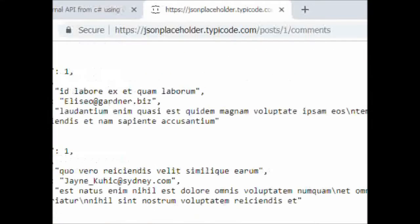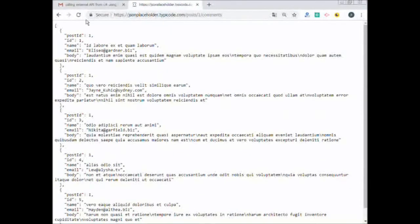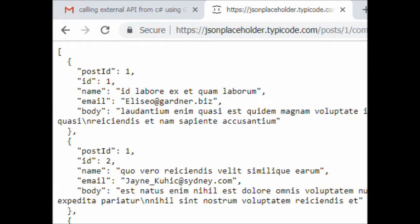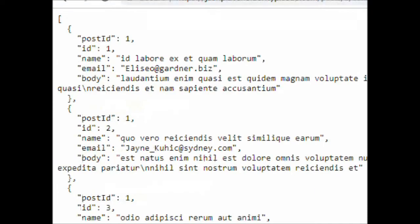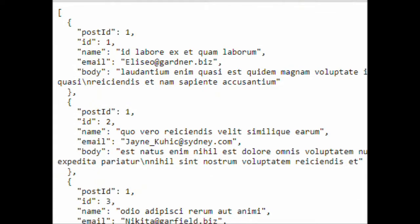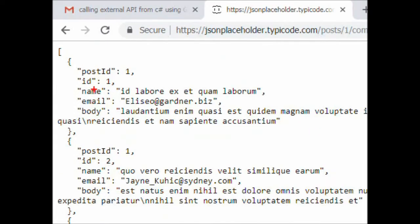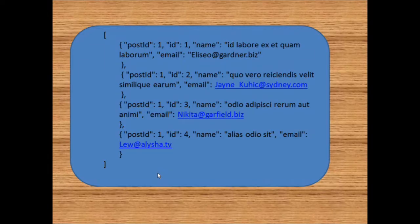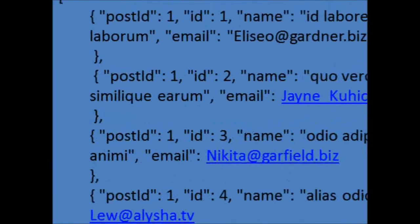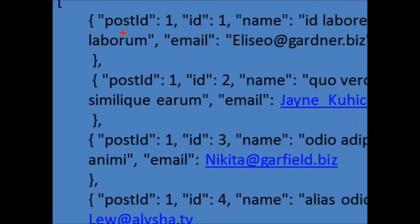This is the API we used in the previous example. This API returns a list having a repetitive data structure — basically it's a list. We'll see how to convert this JSON string into a C# object. You can see we have postID, ID, name, email, body — these are the fields which are repetitive.